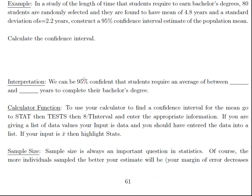This is about where we left off at this example on page 61. A study of the length of time that students required to earn a bachelor's degree, there are 80 students randomly selected, and the average of the sample was 4.8, so that means our x-bar is 4.8.